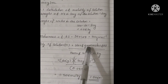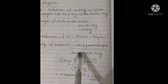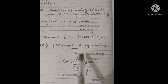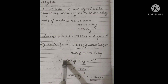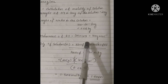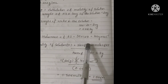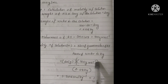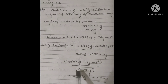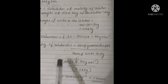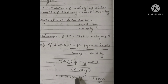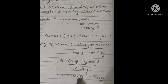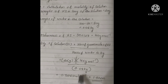Molality equals number of moles of potassium iodide divided by mass of water in kilograms. Number of moles of KI equals 20 grams divided by 166 grams per mole, divided by mass of water in kilograms, which is 0.08 kilograms. This equals 1.506 moles per kilogram, or 1.506 m, where the unit of molality is mol/kg.